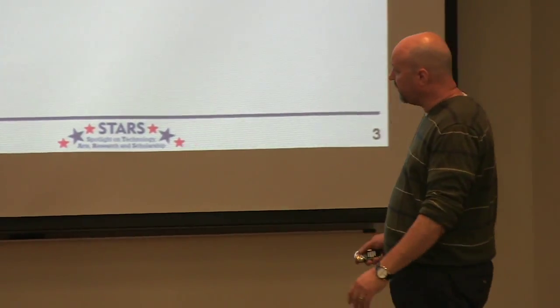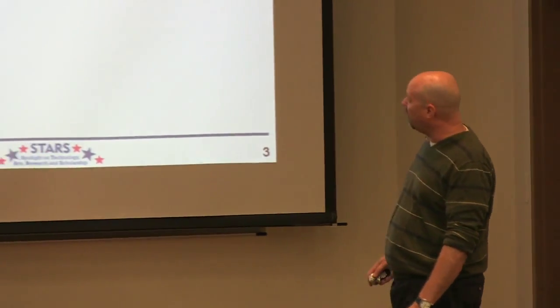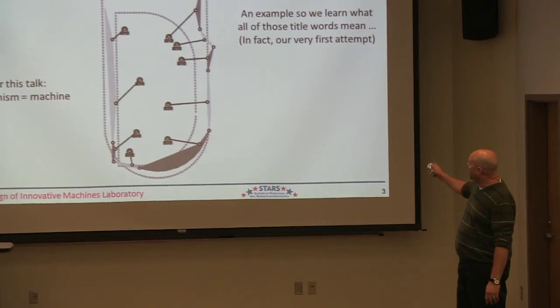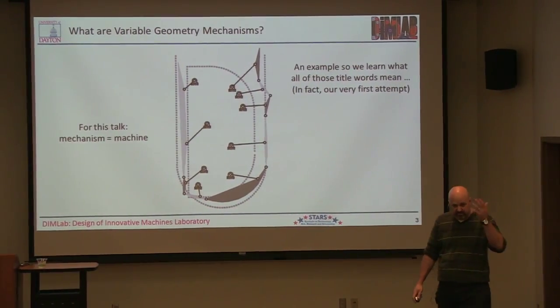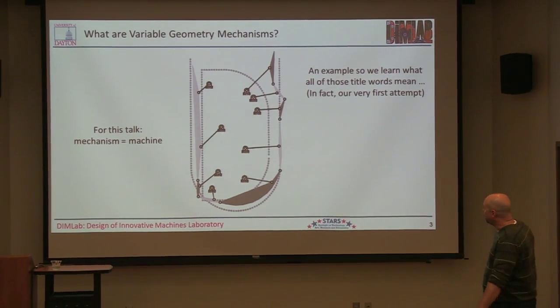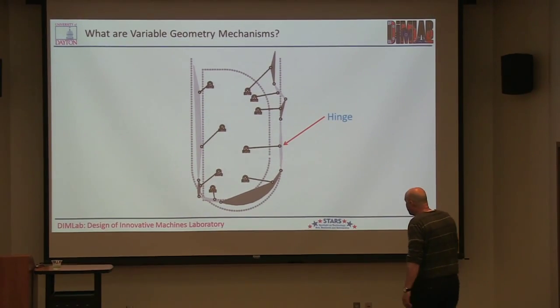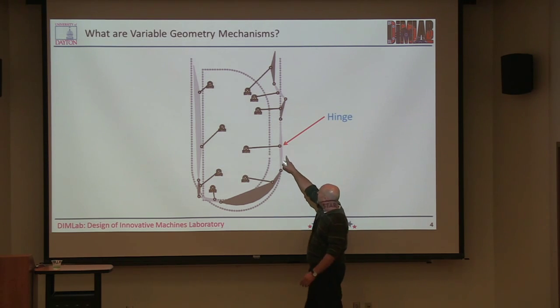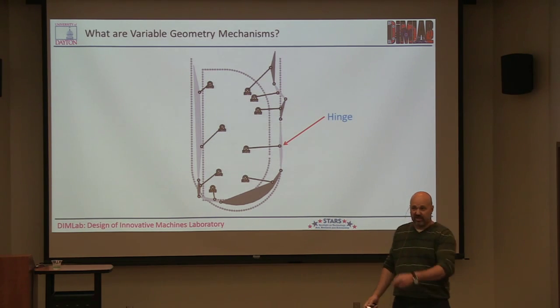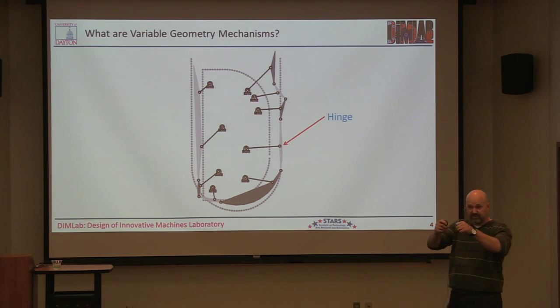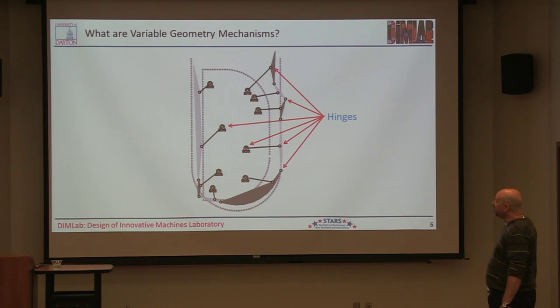I'm going to walk you through a quick example so that I can get to all the words in the title. This was the very first one of these that we designed from the ground up. What we have here is any place where you see one of these black circles, there's a hinge there. We call it a revolute joint, but it's the same as your elbow, the same as a hinge in a door. It allows two things to rotate relative to each other. This thing's loaded with hinges.